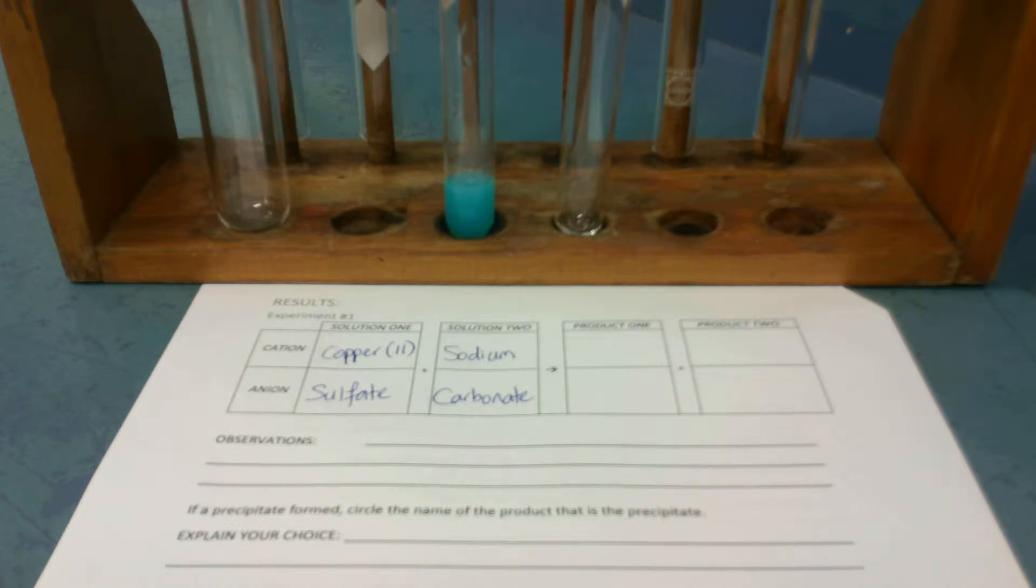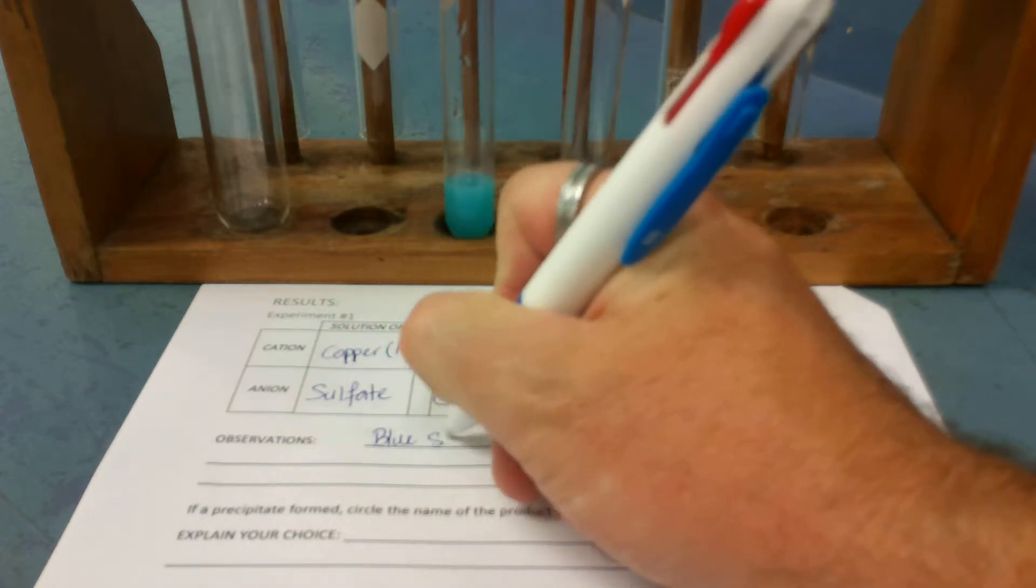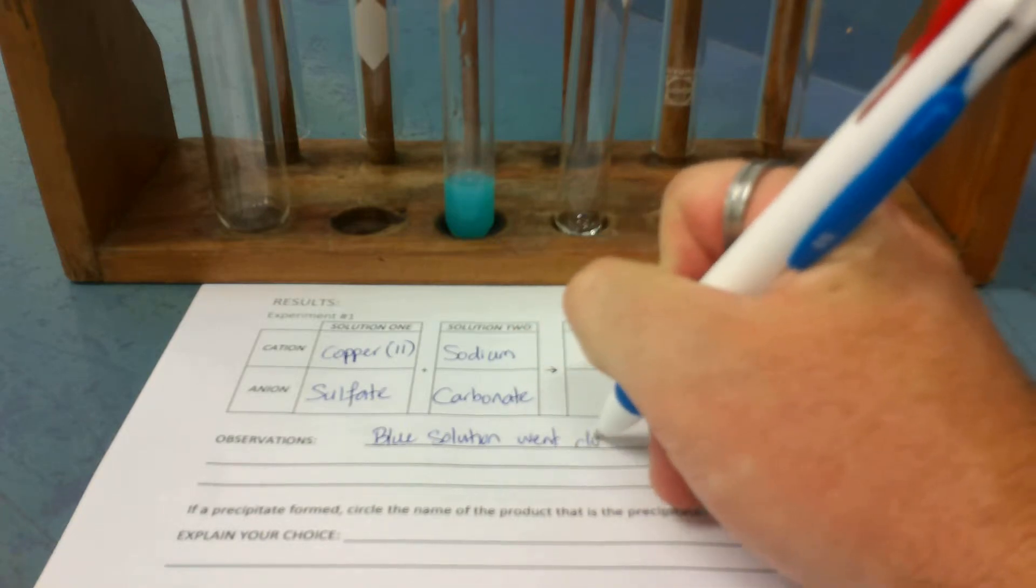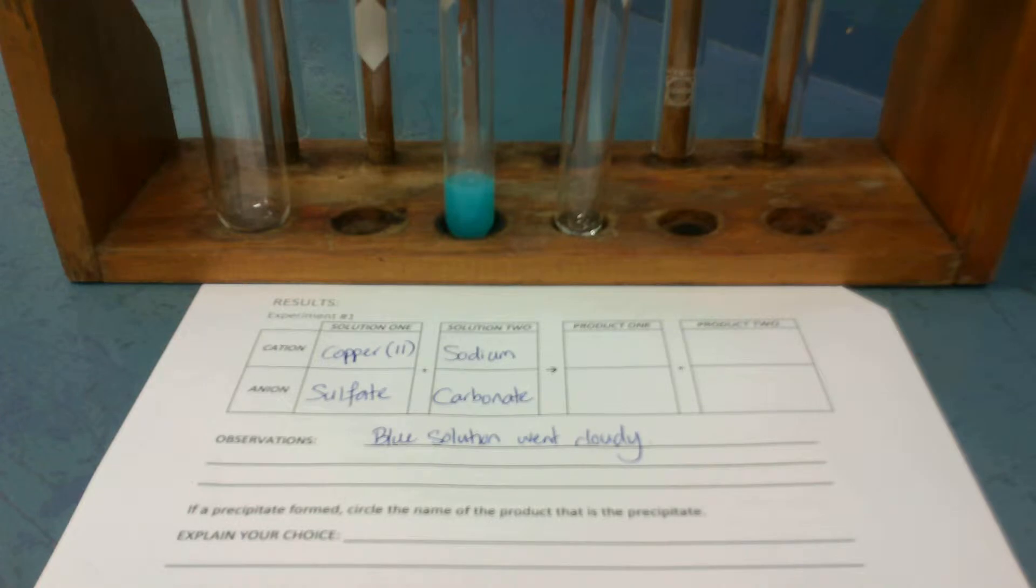So the observation is that we've got a blue solution. So the blue solution turned into a blue precipitate, or a blue solid, or went cloudy. So blue solution went cloudy. That's enough. I know I've given you three lines, but that's enough for an observation.